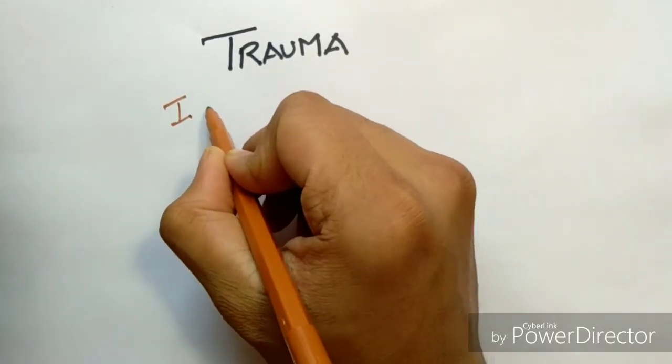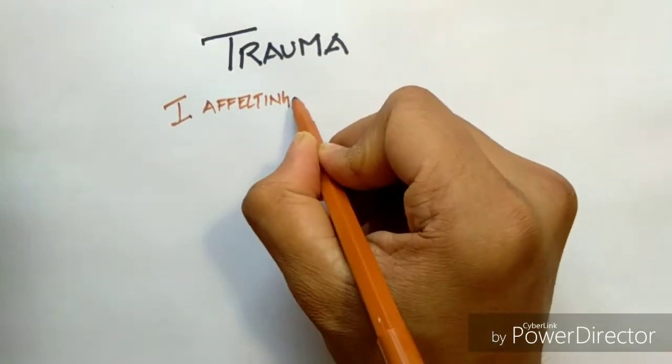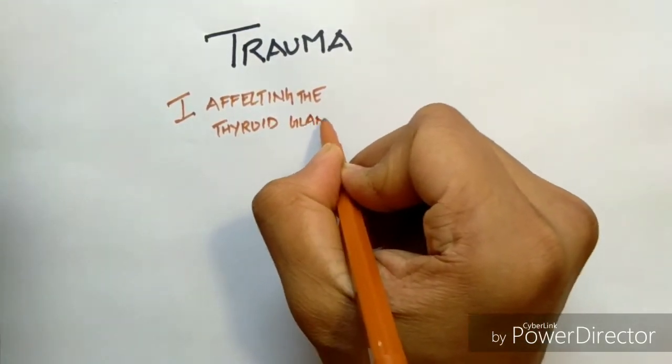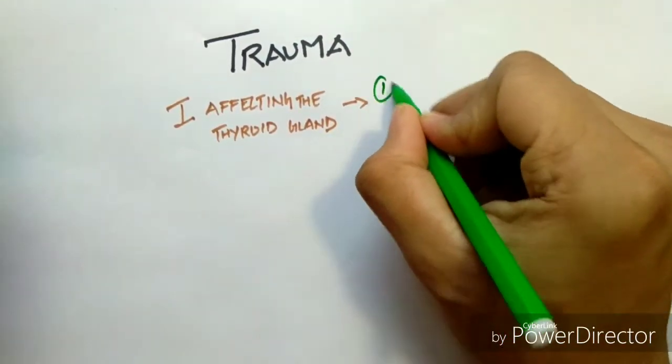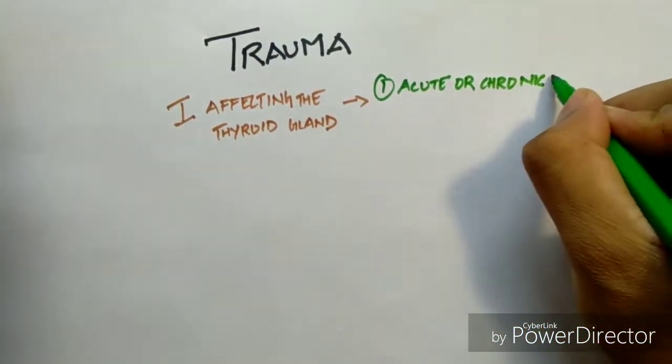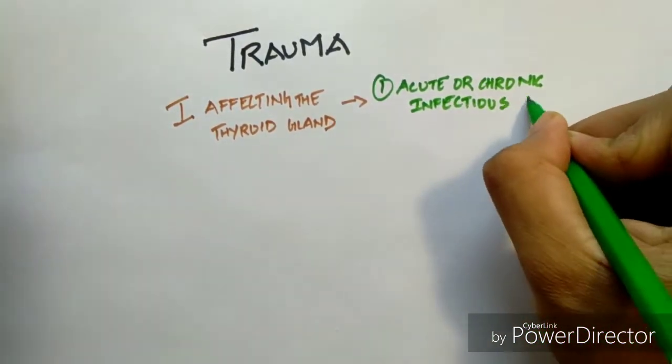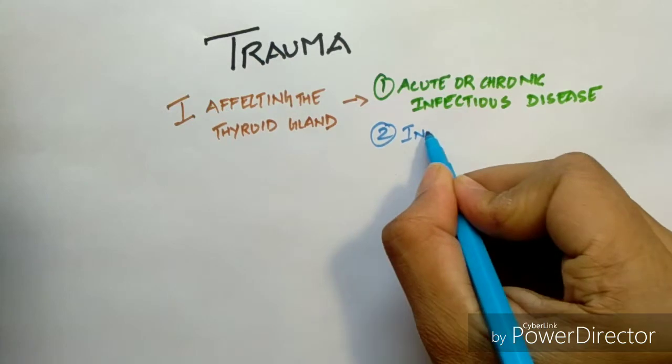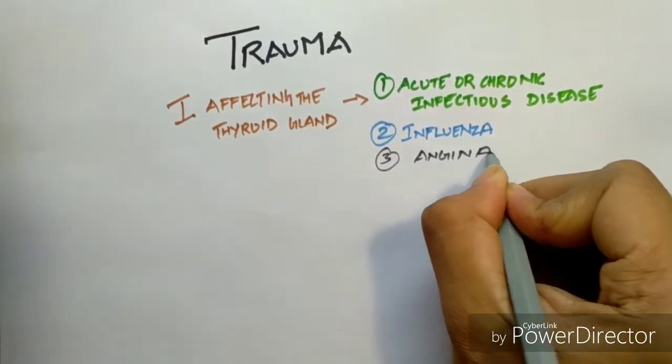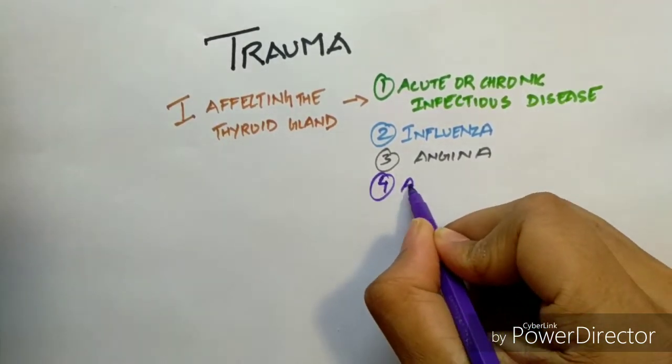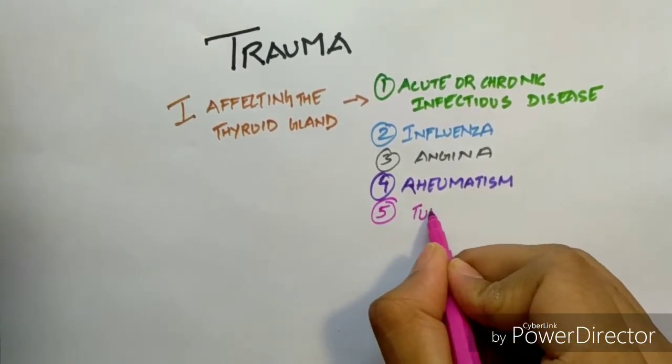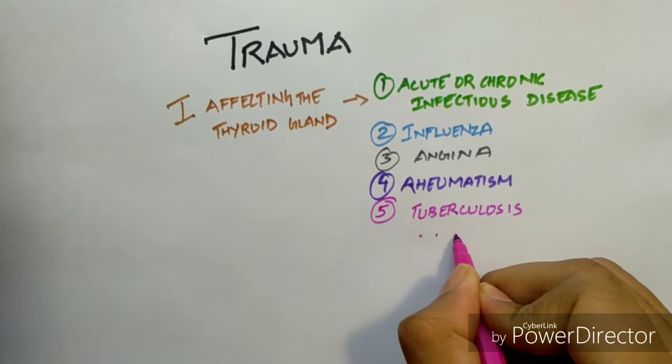Trauma can be direct or indirect. Direct trauma affects the thyroid gland itself by acute or chronic diseases: influenza, angina, rheumatism which is also an autoimmune disease, tuberculosis, and others.